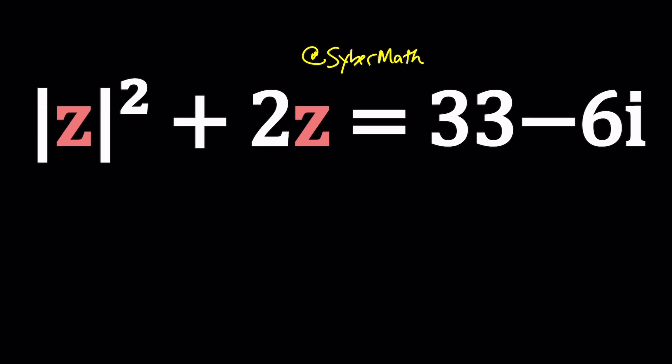We have the absolute value of z squared plus 2z equals 33 minus 6i. So we're going to be solving for z, and if z is a complex number it can be written as a plus bi or x plus yi. But why do we want to go with a plus bi? Because it's the name of this channel. There's a good reason behind that. But you can also use x plus y especially for locus problems.